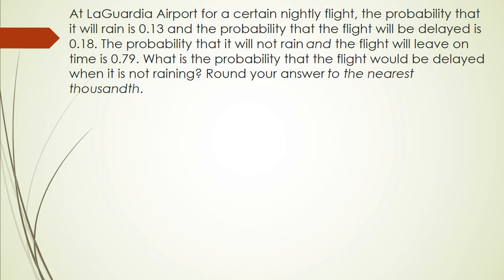The first question was: at LaGuardia Airport, for a certain nightly flight, the probability that it will rain is 0.13 and the probability that the flight will be delayed is 0.18. The probability that it will not rain and the flight will leave on time is 0.79. What is the probability that the flight will be delayed when it is not raining? Round to the nearest thousandth.